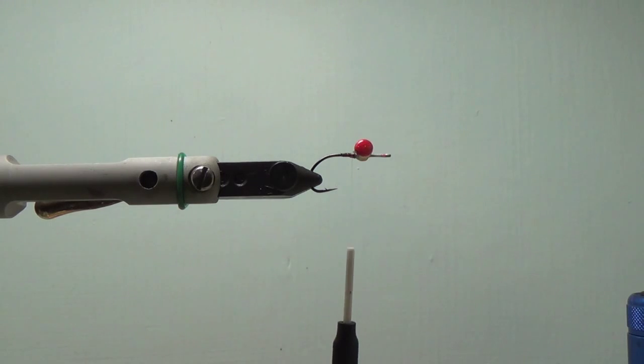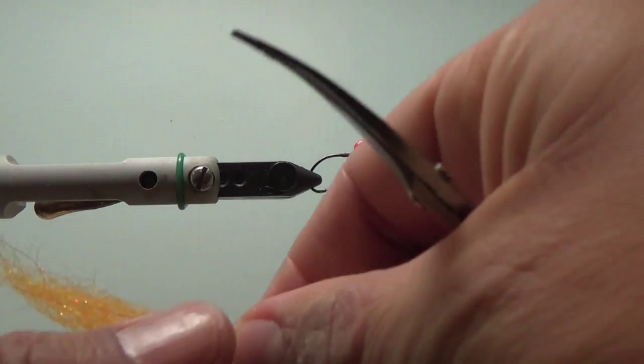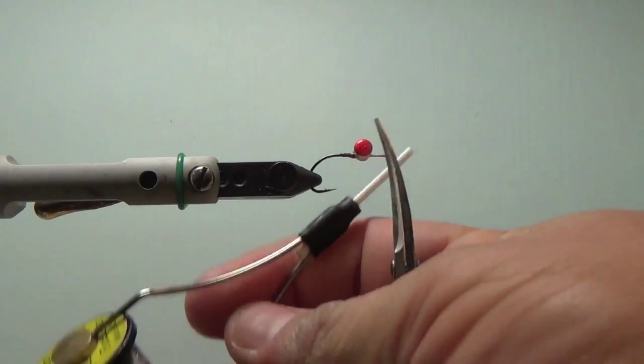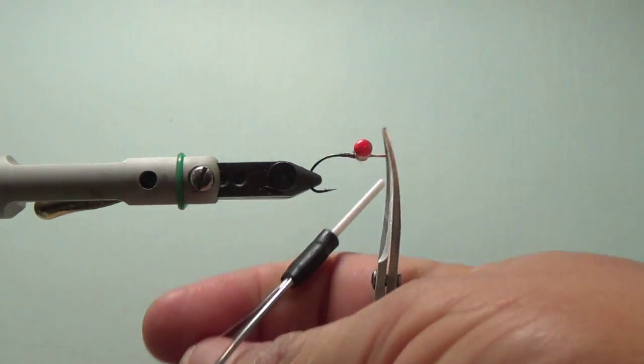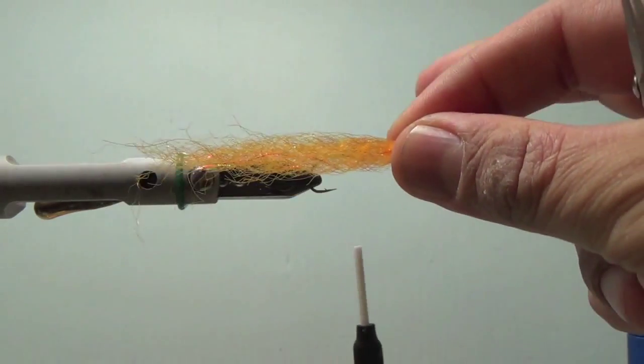Alrighty, let's go ahead and tie this DV Liberace Clouser in the vise. I've got a size 4 Gamagatsu B10S, very good spotted bay bass hook overall. Just a great hook to use. And then my thread of choice here is some Uni Mono Fine Clear. Great stuff. If you've seen in my previous videos, I use that all the time.